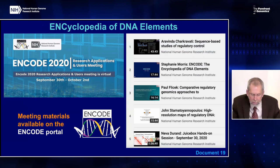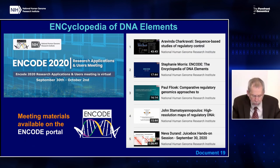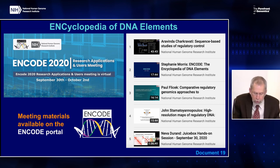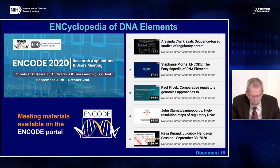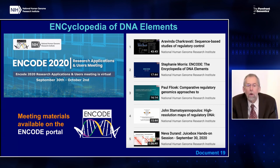Moving on to ENCODE: the goal of the Encyclopedia of DNA Elements project is to create catalogs of all functional elements in the human and mouse genomes and to make those catalogs freely available as a resource to the biomedical research community. In fall of 2020, the ENCODE consortium held a virtual research applications and users meeting with participation from over 500 attendees from the United States and Europe. The meeting featured keynote speakers, talks from ENCODE consortium members, and interactive instructional workshops on ENCODE resources. Recorded meeting materials can be found on the ENCODE portal, which also hosts information from all previous meetings, along with data analyses, protocols, and standards.